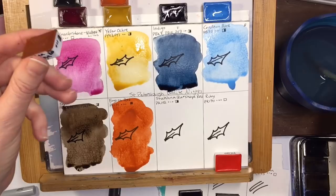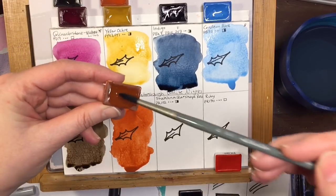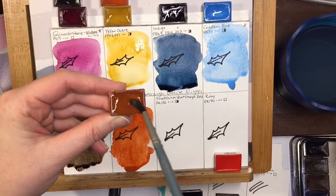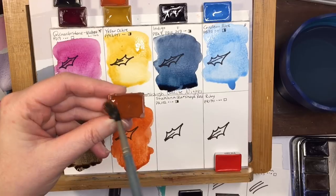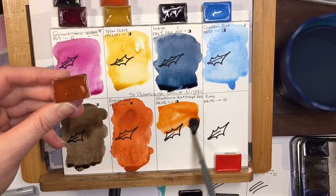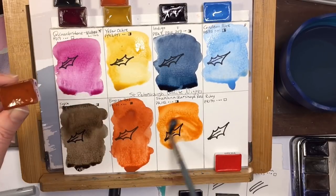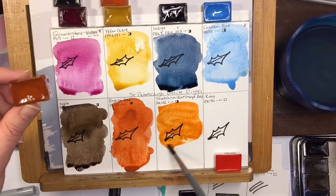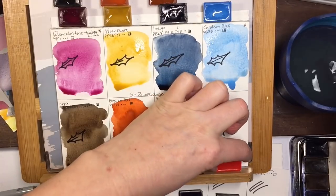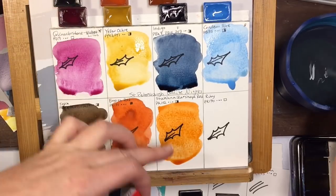Okay, so this is Shakna Sarkaya red. I really tried there for you guys. This is a PR102, so it's a little bit more orange and a lot more transparent than this one. It's really pretty. Kind of like an orange oxide. Really nice. I could see myself using this a lot.